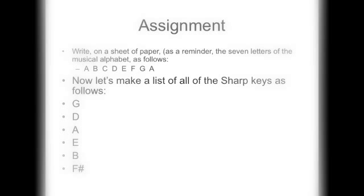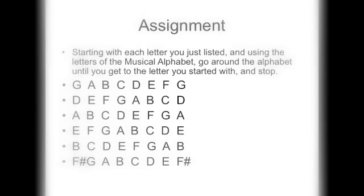Get a sheet of paper and write across the top: A B C D E F G A — a reminder of the notes in the musical alphabet. On the left side of the paper, starting with G and going around the circle of fifths on the sharp side down to F sharp, put a different letter on each line: G, D, A, E, B, F sharp. These are the scales for all the keys that have sharps. Then fill in the major scale letter names by going through the musical alphabet until you return to the starting letter — don't worry about sharps or flats yet. So G: G A B C D E F G; D: D E F G A B C D; A: A B C D E F G A, and so on.